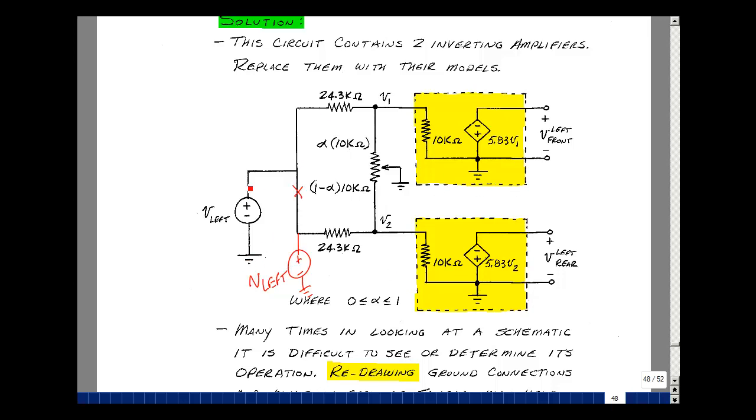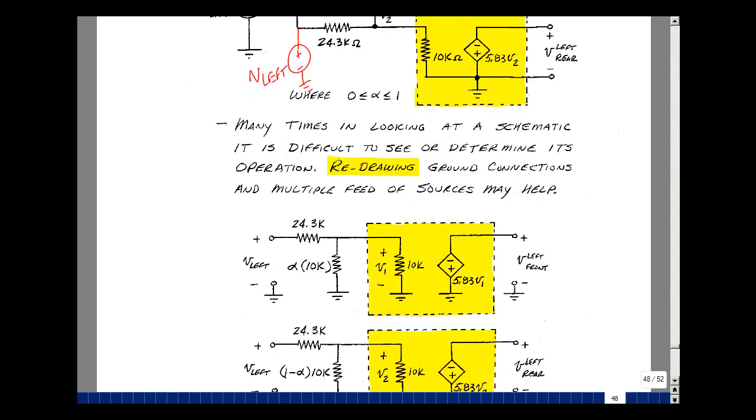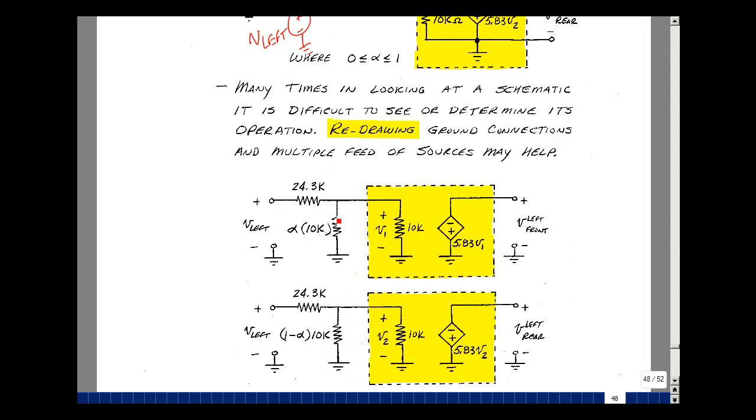So I've got a top half of the circuit and a bottom half of the circuit. Let me just draw the top half of the circuit. So I've got a Vleft coming here, a 24.3k, and then alpha times 10k back to ground, a 10k back to ground, and then an output through a controlled source back to ground. Redrawing the top circuit, the resistor, the pot, another resistor, and then the control source.